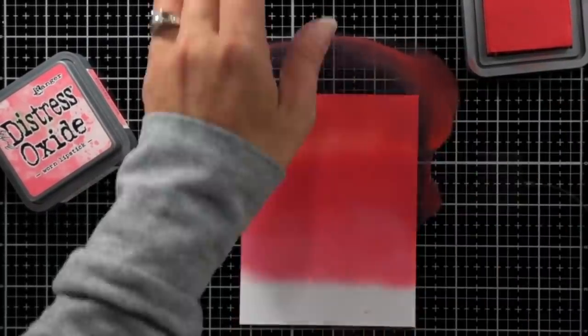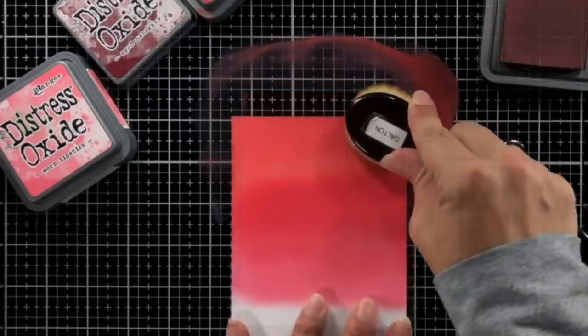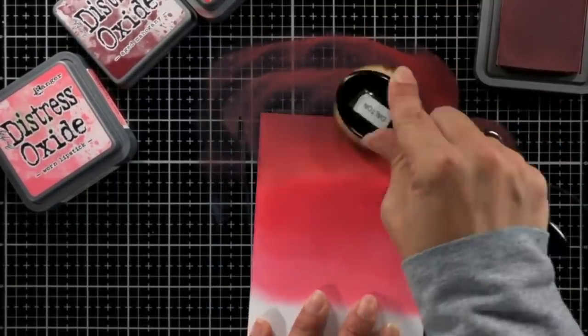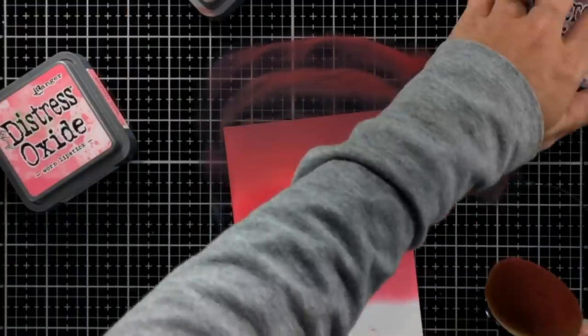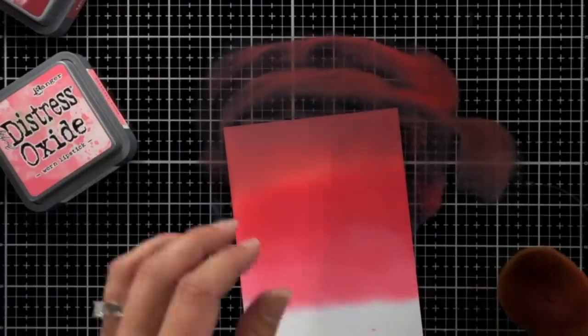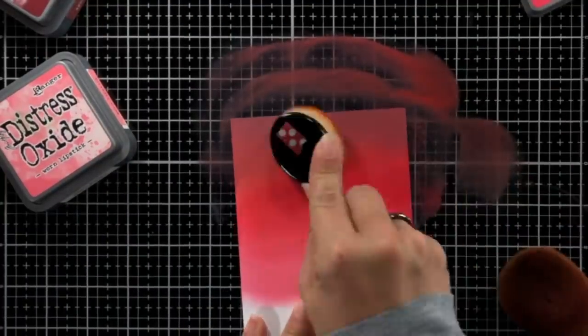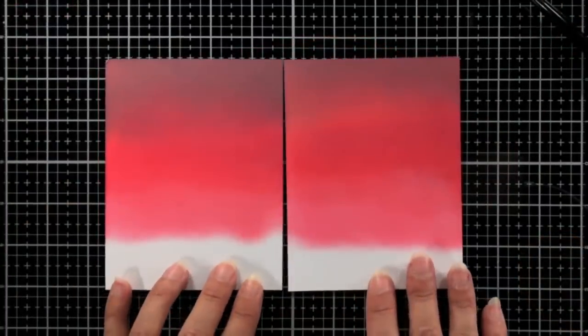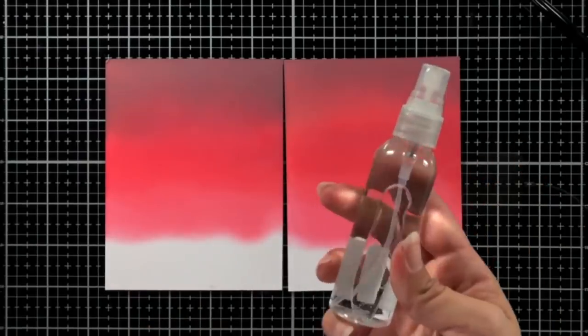You can totally do the blues for the background, which is typically what I would do for the nighttime sky. I just thought red was a really nice change up for my background. I like to kind of keep things interesting on my cards. And then I can just go back and forth over my colors with my life-changing blender brushes to even out that transition.